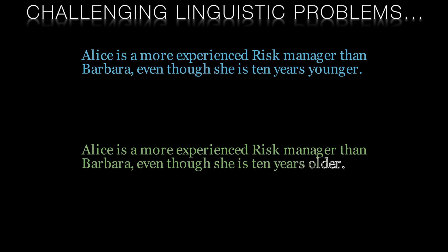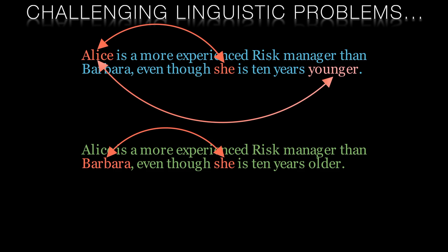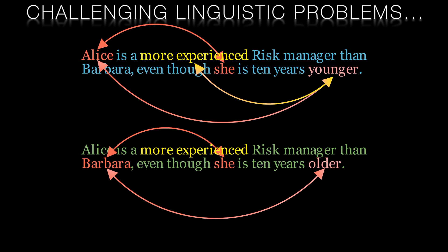Look at these two sentences — they differ by just one word and have very similar meanings. To whom does the pronoun 'she' belong in each sentence? In the first sentence we would say it's Alice; in the second sentence we would say it's Barbara. In the first sentence we have the word 'younger,' which makes 'she' attend to Alice. In the second sentence we have the word 'older,' which causes 'she' to attend to Barbara. This attention is itself brought about by the phrase 'more experienced' being attended to by the phrase 'even though.'